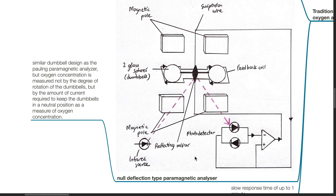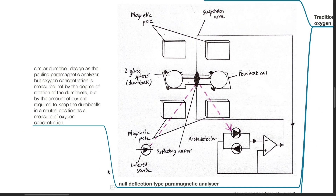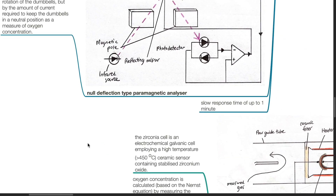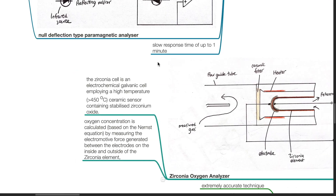The null deflection type paramagnetic analyzer has a similar dumbbell design to the Pauling analyzer. However, oxygen concentration is measured not by the degree of rotation of the dumbbells, but by the amount of current required to keep the dumbbells in a neutral position. It has a slow response time of up to one minute.